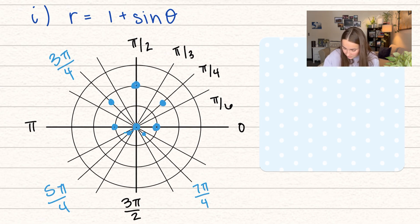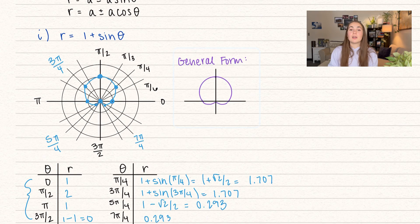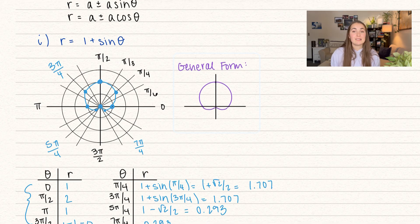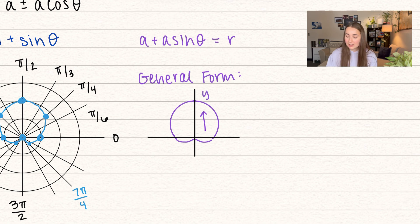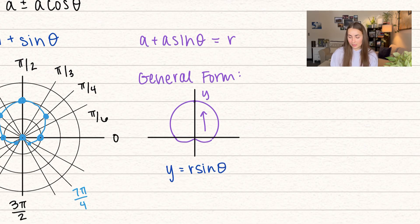The general form a plus a sine theta looks like a squished circle — like a circle squished upward — and it extends in the positive y direction. Remember that y equals r sine of theta, so when you see sine theta, the curve opens or is much larger in the y direction.